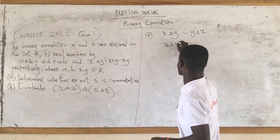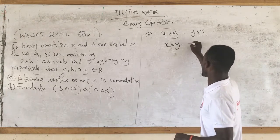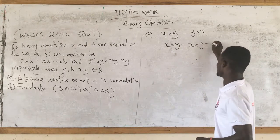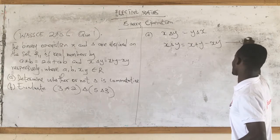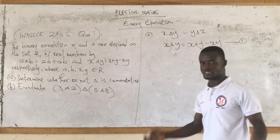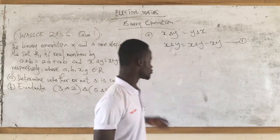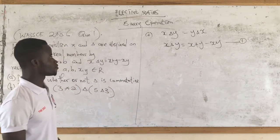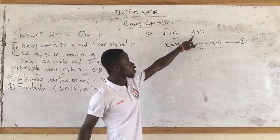From the question, we know that x delta y equals x plus y minus xy. We call this equation one. Now we move on to check for y delta x.